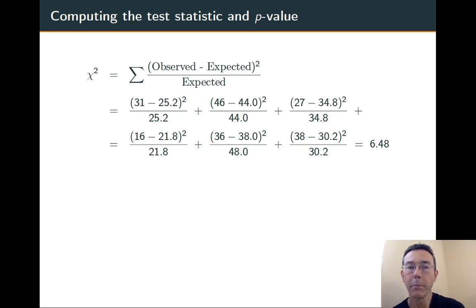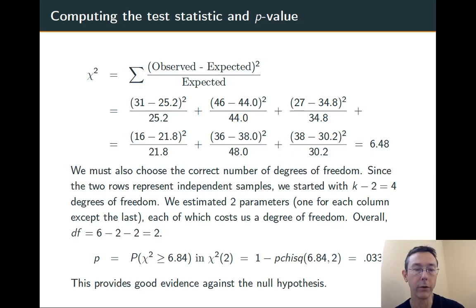Last thing we've got to do before we compute a p-value is to talk about degrees of freedom. In this case, we have two independent samples, one for each row. So we're starting with 4 degrees of freedom. We had 6 total cells, we take away those two for the two independent samples. We also have to take away 2 degrees of freedom because we estimated two parameters, one for each column except the last, which is determined by the other two. So overall, we've got 2 degrees of freedom.